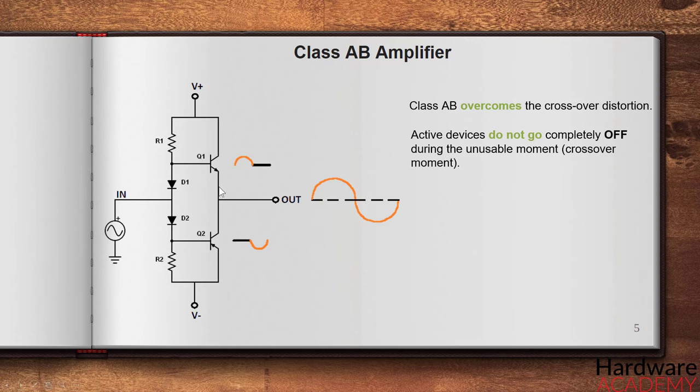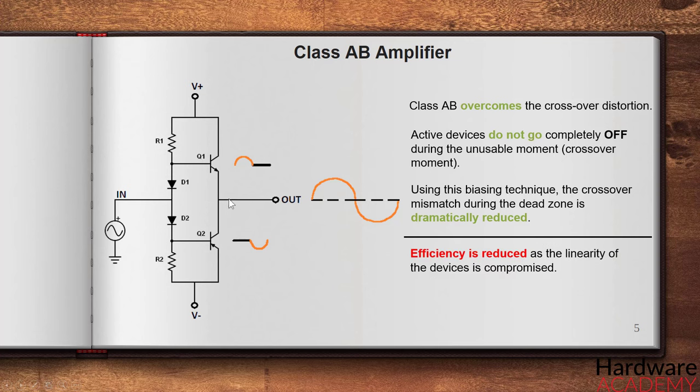Instead, they conduct a small amount of input on another half cycle. Using this biasing technique, the crossover mismatch during the dead zone is dramatically reduced. But in this configuration, efficiency is reduced as the linearity of the devices is compromised. The efficiency remains more than the efficiency of typical class A amplifier but it is less than the class B amplifier system.